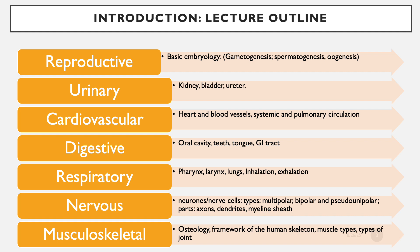Then the nervous system — we look at neurons or nerve cells, their types: whether they are unipolar, bipolar, pseudo-unipolar, the parts of the neuron such as the axon, dendrite, and myelin sheaths. We also look at the spinal cord in brief, the central nervous system, and other aspects including parasympathetics and sympathetics and how they work.